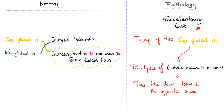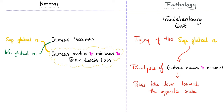As you remember from the previous video, the superior gluteal nerve supplies gluteus medius, gluteus minimus, and tensor fasciae latae. The inferior gluteal nerve supplies the gluteus maximus, because this muscle is so huge that it's enough for the inferior gluteal nerve alone.